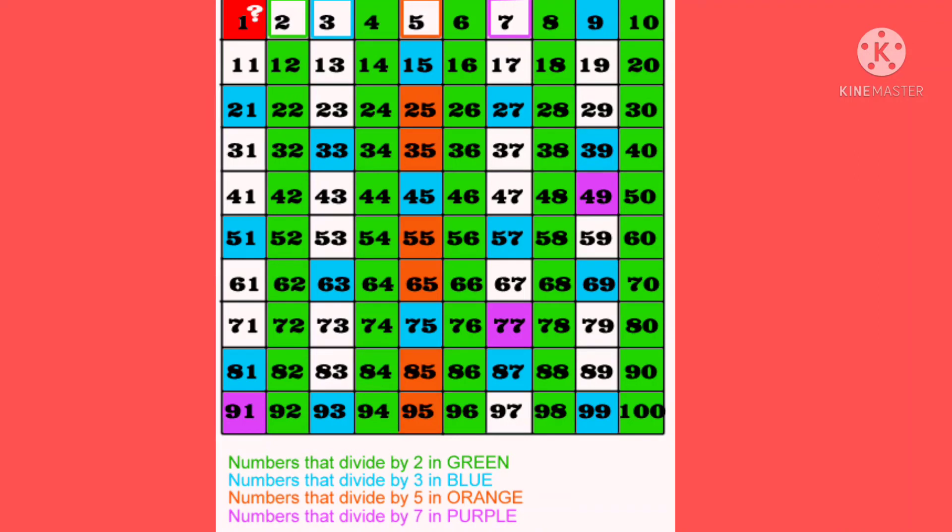So, as you can see in the chart, the numbers that are divisible by 2 are shaded in green. Numbers divided by 3 are shaded in blue. Numbers divided by 5 are in orange and that by 7 are in purple. The numbers which are left uncolored are all prime numbers.